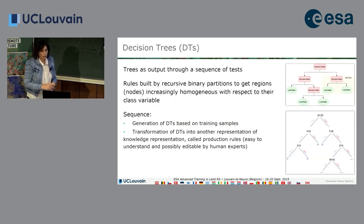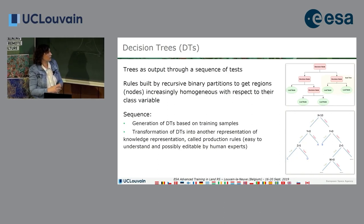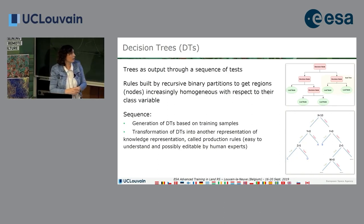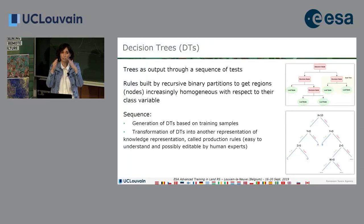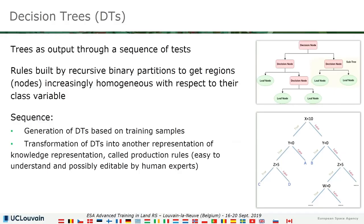We move to another family: decision trees. This is rather easy to understand — it is quite hierarchical, and at each level you have a criterion or rule that is tested, and then you decide whether you go down one branch of the tree or another.